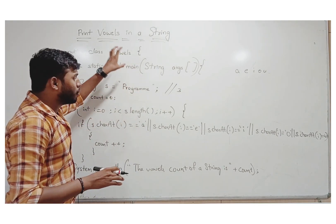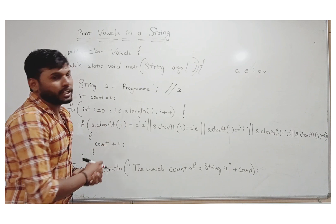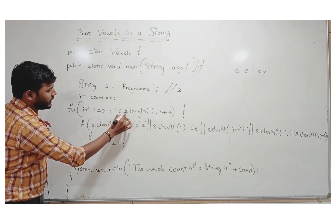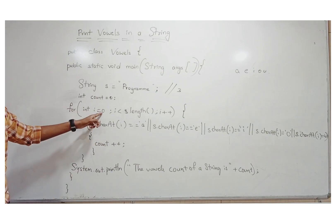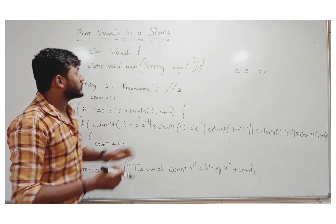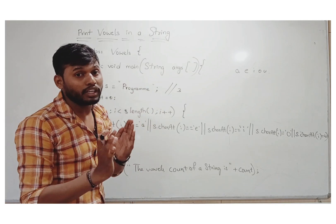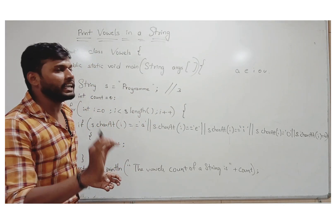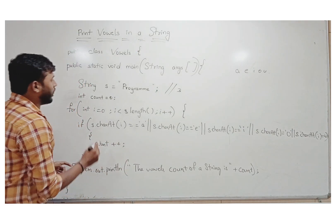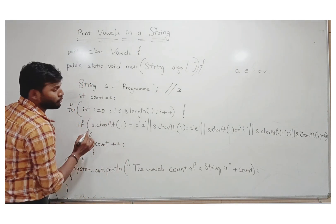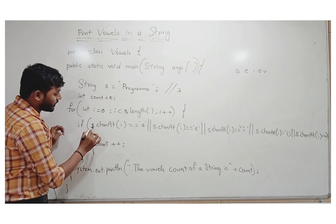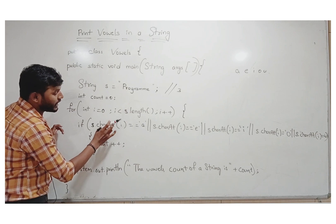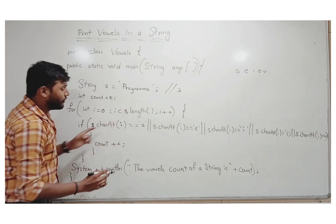Now let us see how we can write the program — how we can execute this in a programmatic way. When the string starts, the loop begins at index zero. This program follows a similar approach to finding the occurrence of a character or duplicates in a string, but here the condition is a bit different.